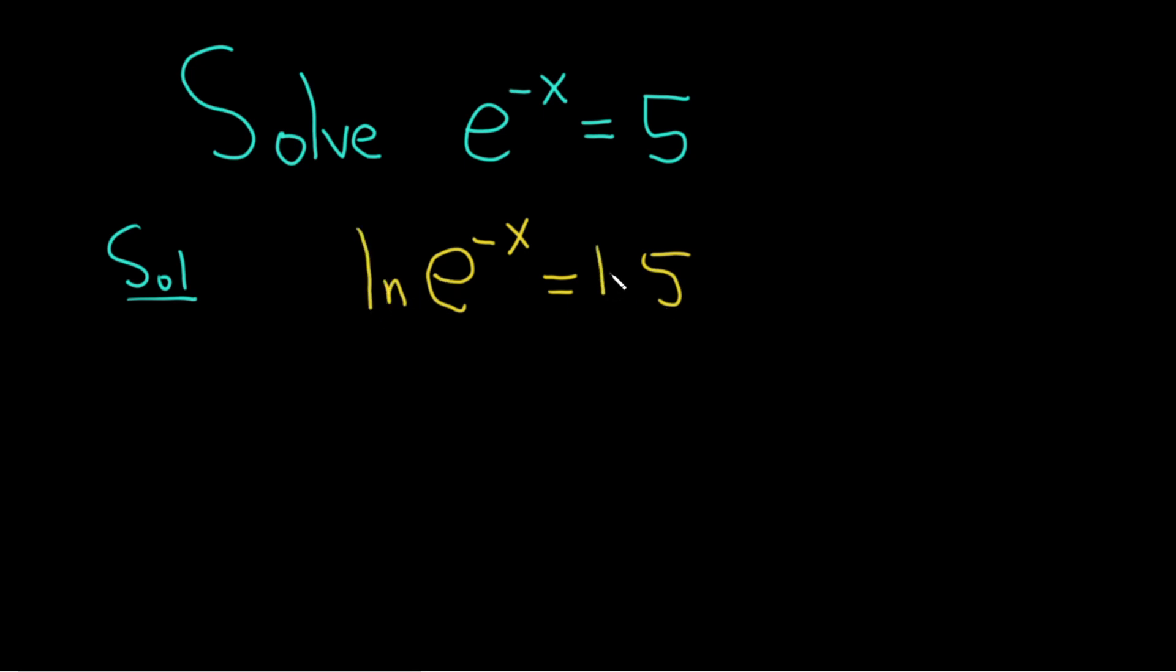And the reason this works is whenever you have the natural log of e to the x, this is always equal to x. You can think of it as the natural log and the exponential basically canceling. This is true because they're inverse functions. So here the ln and the e, basically these functions cancel.